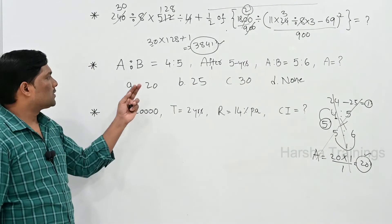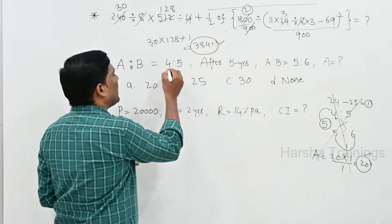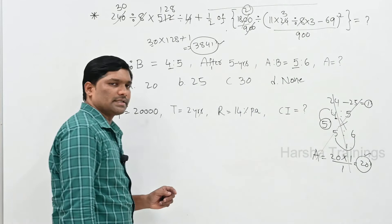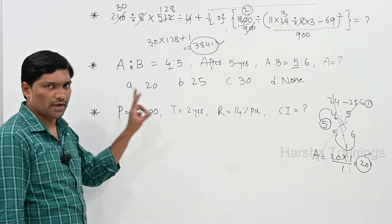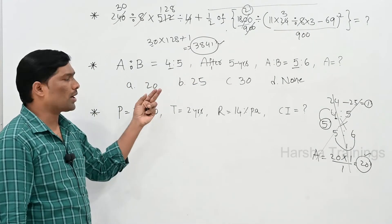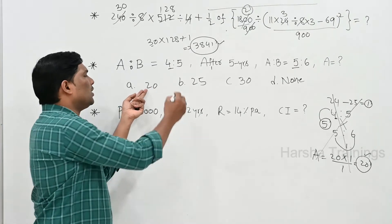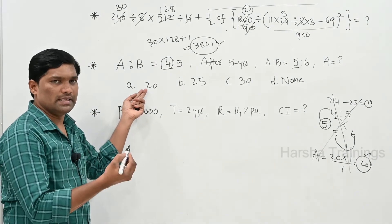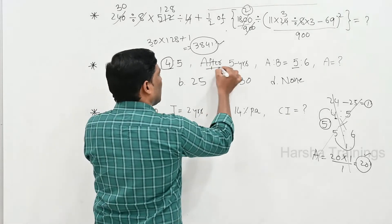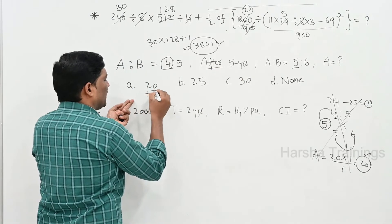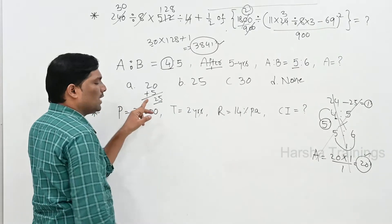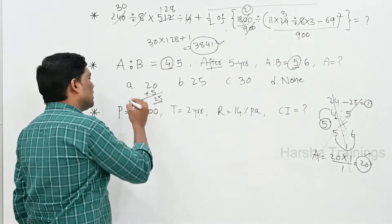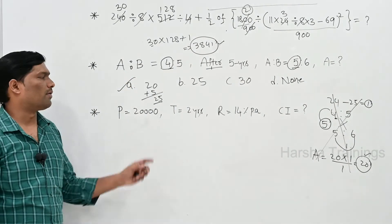Option verification: A has 4 parts currently, and 5 parts after 5 years. Check first option — 20 years: is 20 a multiple of 4? Yes. After 5 years: 20 plus 5 equals 25; is 25 a multiple of 5? Yes. So first option is the right answer. Option B (25): is 25 a multiple of 4? No — wrong. Option C (30): is 30 a multiple of 4? No — wrong.